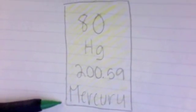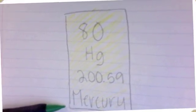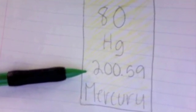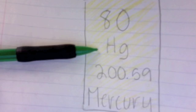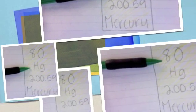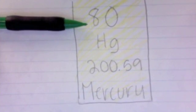This is an example of an element. At the bottom, it shows the name of the element, then the atomic mass, the symbol for the atom, and the atomic number.